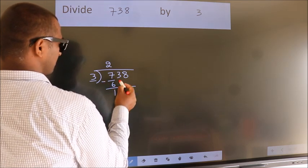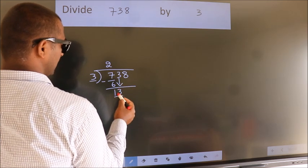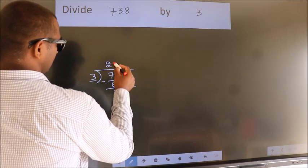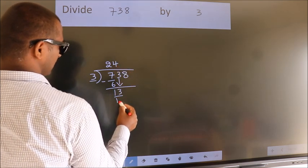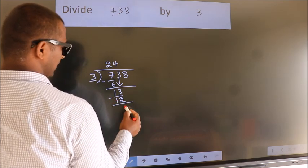After this, bring down the next number. 3 comes down, so we have 13. A number close to 13 in the 3 table is 3 times 4, which is 12. Now we subtract and get 1.